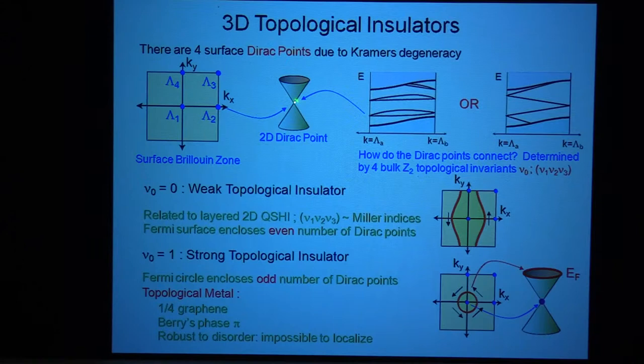So each of these Kramers degenerate points, each of these points is really going to be a two-dimensional Dirac point, where this degeneracy is really protected by time reversal symmetry. And so you have lots of Dirac points on the surface, but the interesting question is how they connect up with each other.